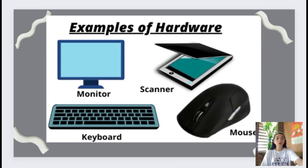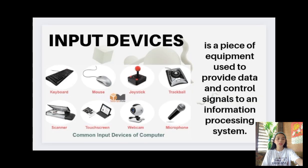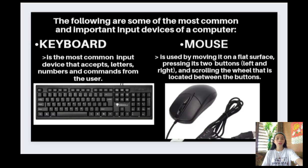Here are some important components of a computer. Input and output devices are essential hardware components that enable users to interact with a computer system. First, we have the input devices — a piece of equipment used to provide data and control signals to an information processing system. The following are some of the most common and important input devices of a computer.